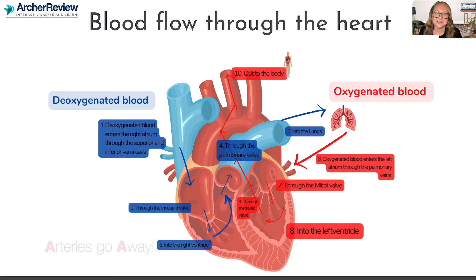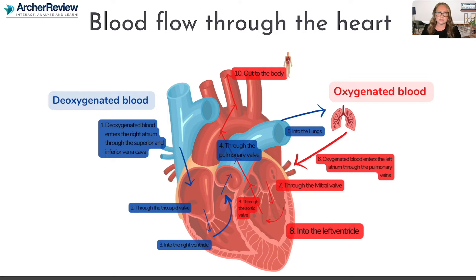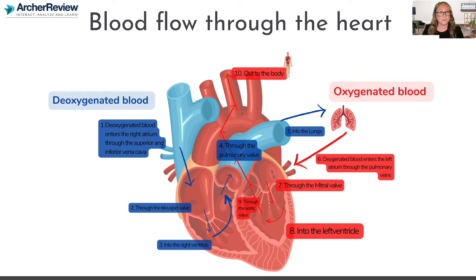That's going to send it through the pulmonary artery and out to the lungs. Remember: artery means away from the heart. The right side of the heart — the deoxygenated side — is sending blood out to the lungs; it's the blue line of that subway. Once the blood gets out to the lungs, it's going to drop off all of the waste products and pick up that really good oxygen.